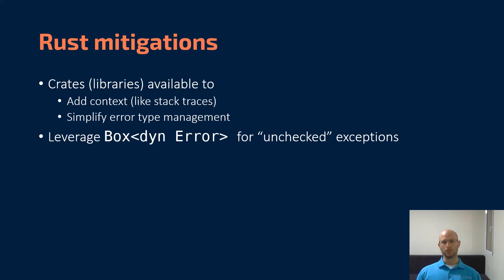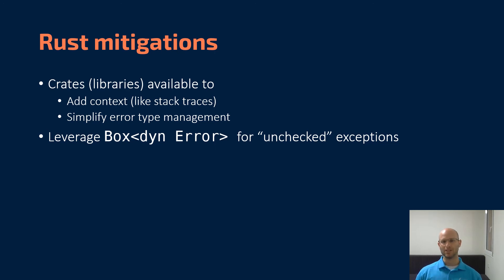Other mitigations you can look into for simplifying those problems: there are crates, or libraries, available in the Rust ecosystem to help with proper error type handling — things that are able to add context, which is basically like getting stack traces back, or to simplify error type management overall. Another technique that many people use, especially with smaller programs that don't need to be as precise in their error handling, is the boxed error approach, which basically means a dynamic 'something went wrong.' This is very similar to unchecked exceptions, except you still know that something may have gone wrong, as opposed to having no idea whether something could go wrong at all.